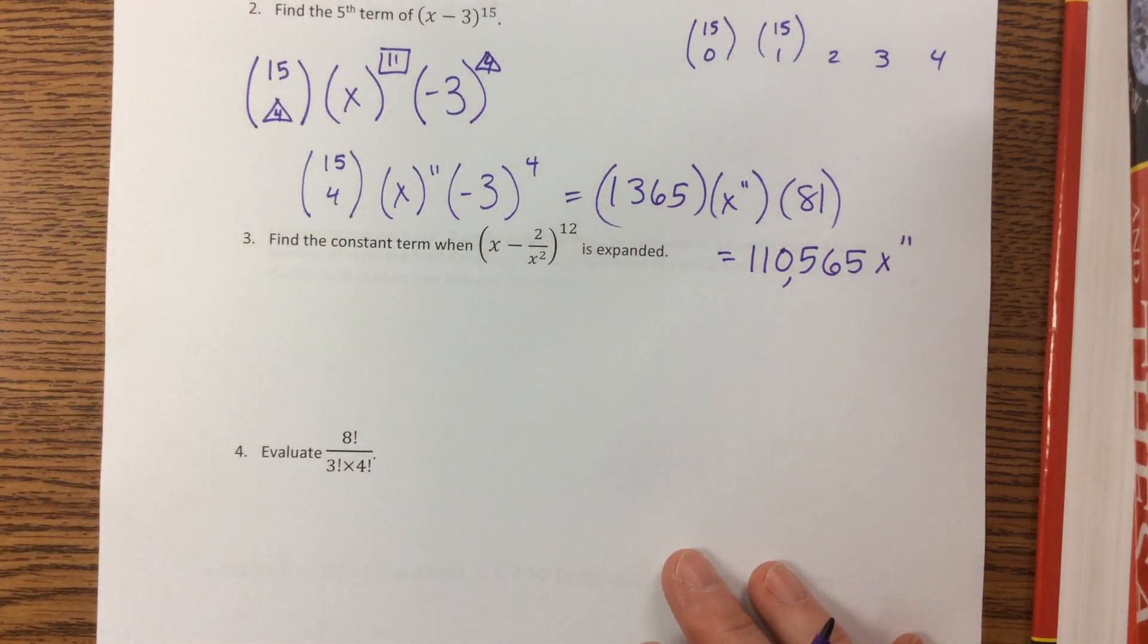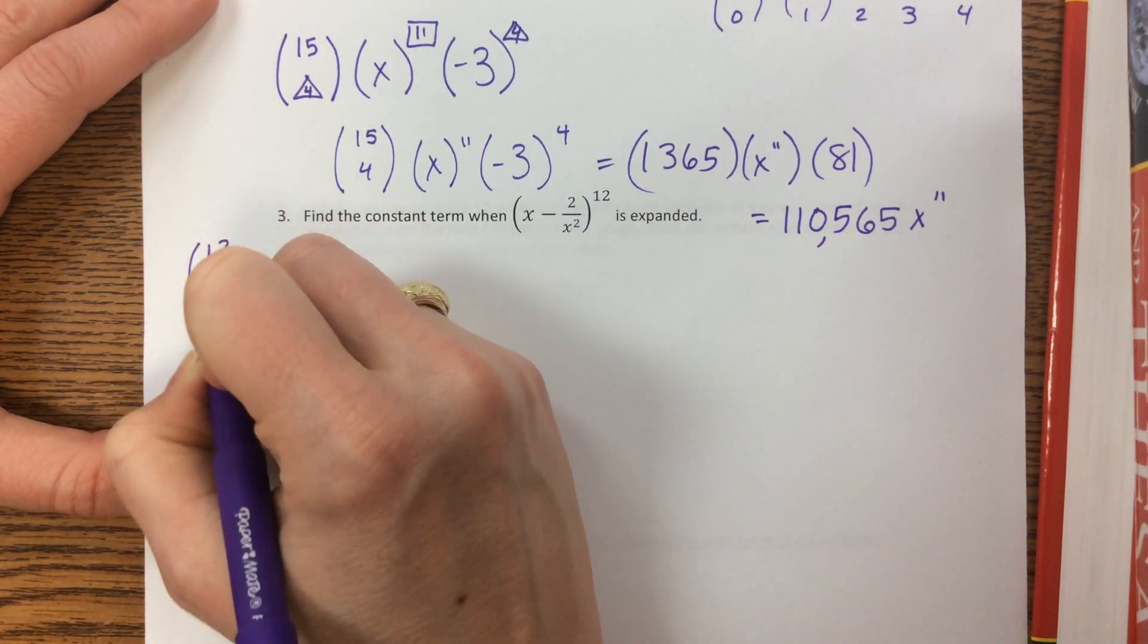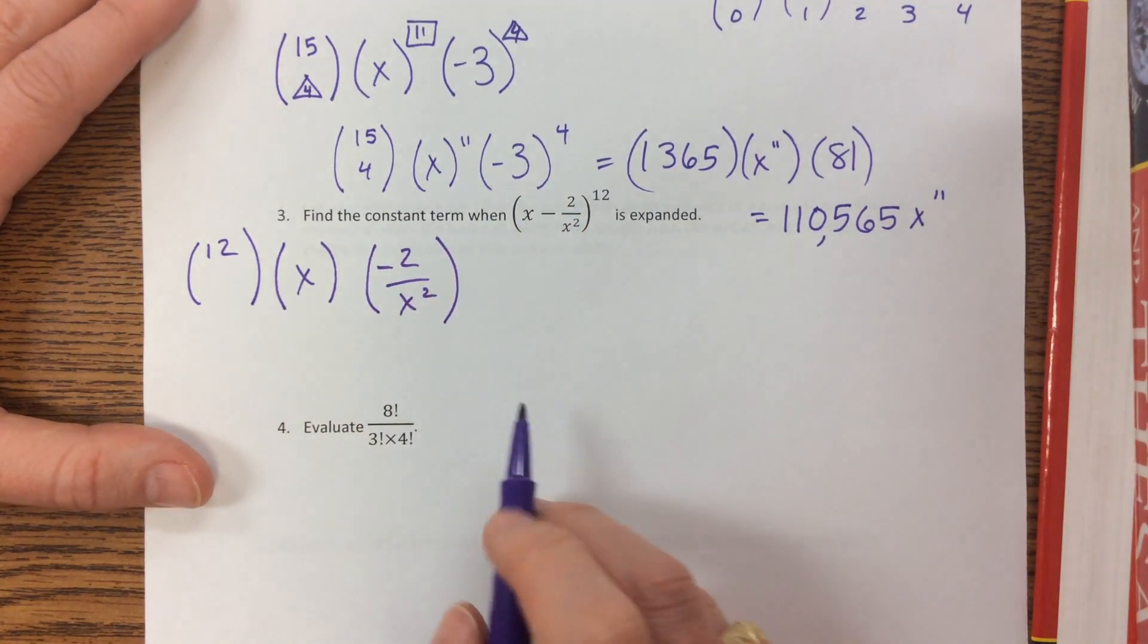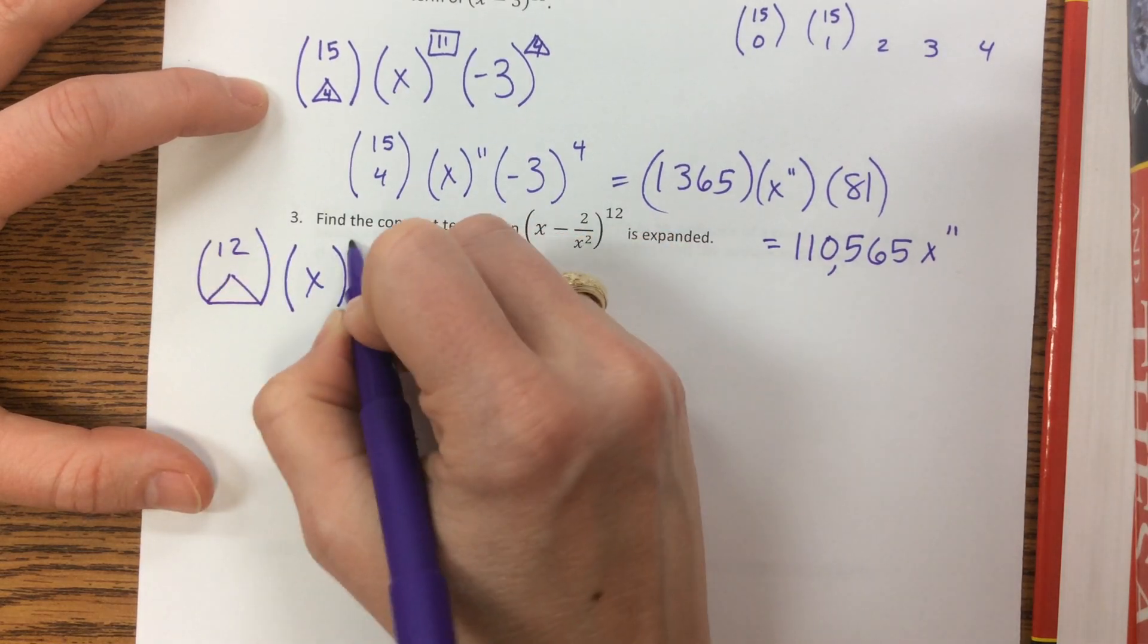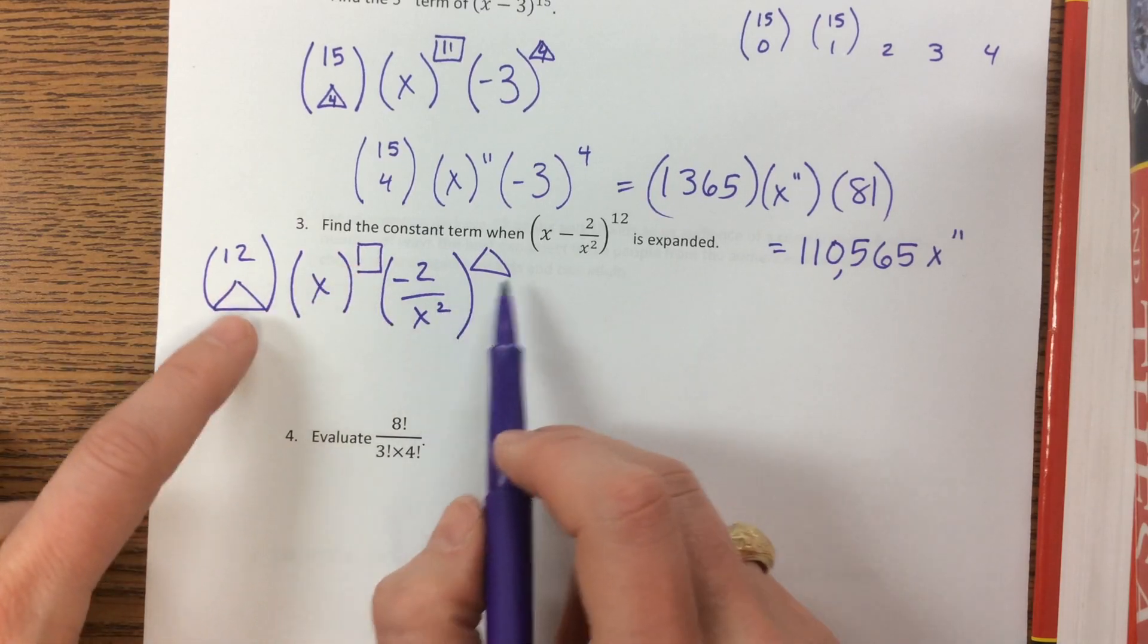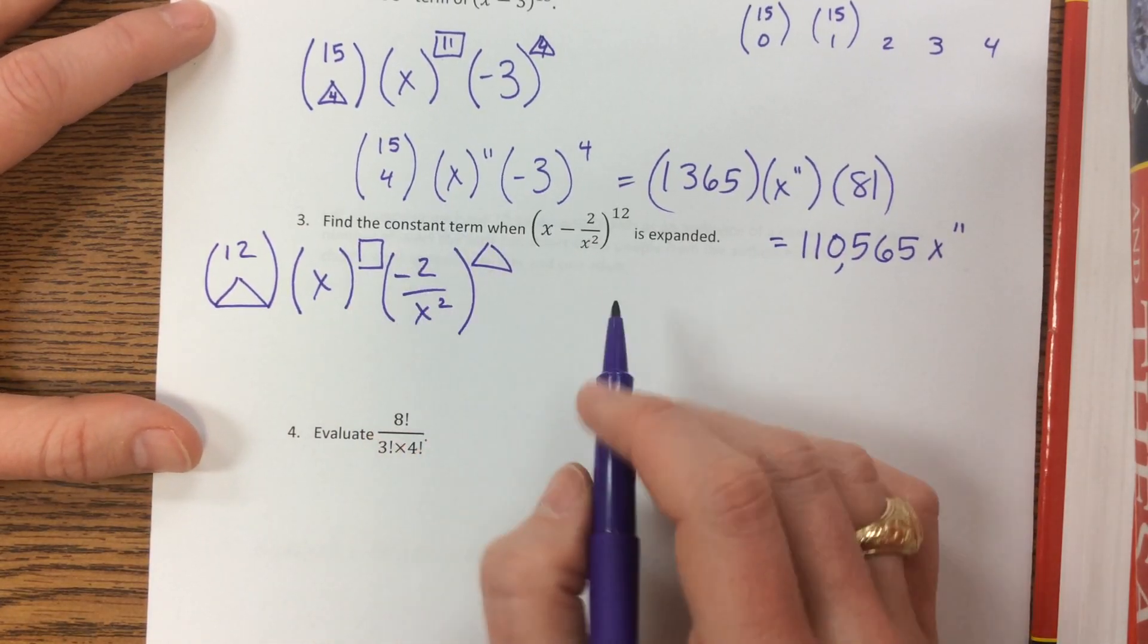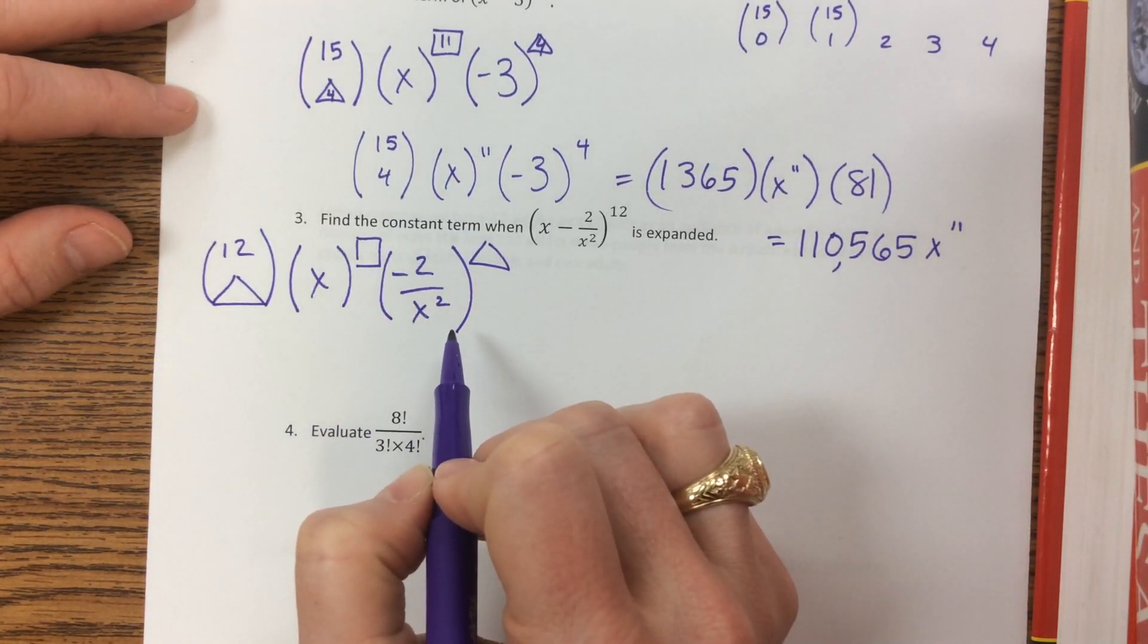Yep, there you go. Okay, and then one more example for this one and it says find the constant term. So we've got 12 choose something. We've got x raised to a power and we've got this negative 2 over x squared raised to a power. Well, what I want to do, okay, so we'll use those little triangles. This is a triangle. These match. This is whatever. These two have to add up to 12. And these two are going to be the same. Okay, so when I have, I want to get, the constant term means that there are, it's x to the 0 power. So I want the same number of x's in the numerator as in the denominator.